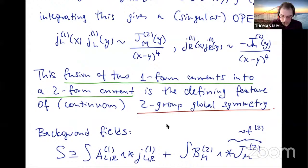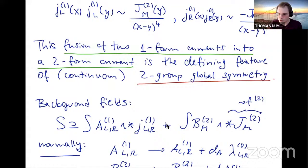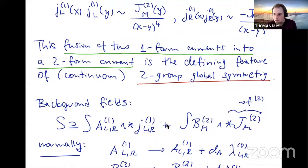This is a non-trivial fusion algebra of two one-form currents into a two-form current, dictated by these mixed gauge-global anomaly coefficients. And this fusion of two one-form currents into a two-form current is, at least for the purposes of this talk, the defining feature of two-group symmetry — two-group global symmetry. We have two kinds of global currents: one is an ordinary one-form current for zero-form symmetry, and one is a higher-form current for one-form symmetry. Often these don't talk to each other, but here we have a situation where they are forced to mix, and this is the OPE that controls the mixing.